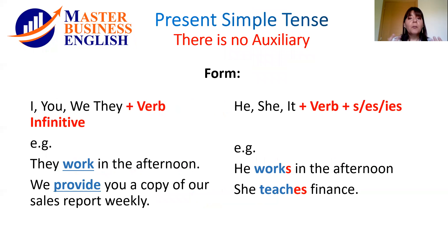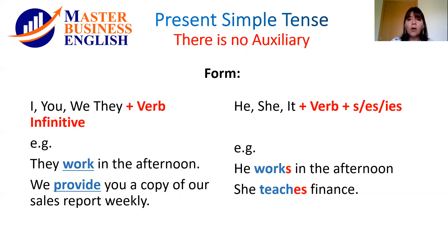In present simple tense, in a positive sentence, there is no auxiliary. When we have the subject pronouns I, you, we, or they, the verb goes in infinitive — we do not conjugate the verb; it remains in infinitive. Only with the subjects I, you, we, and they.